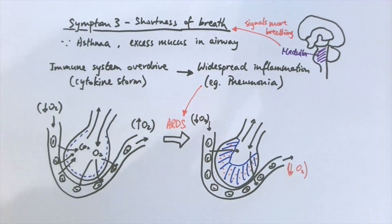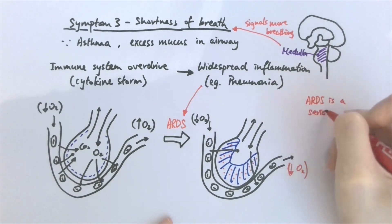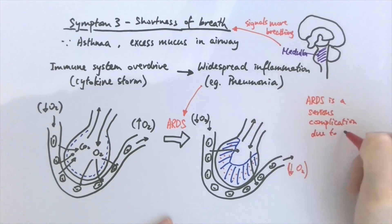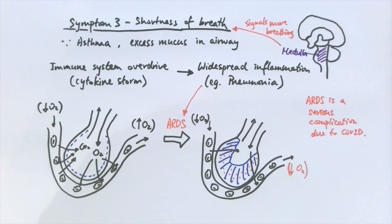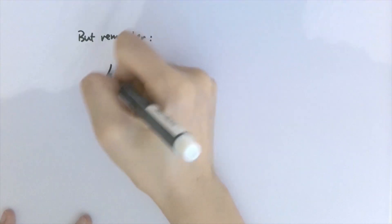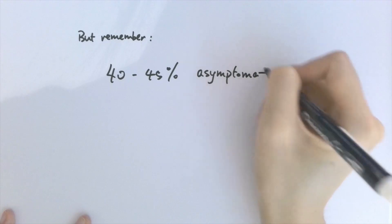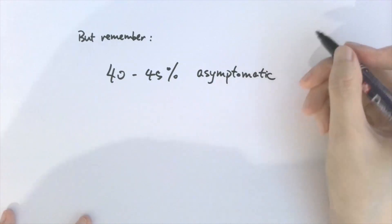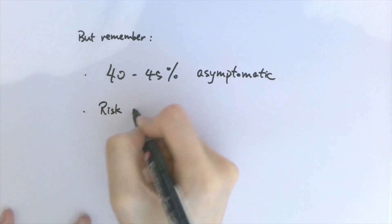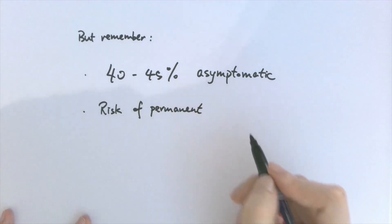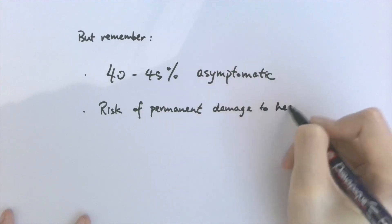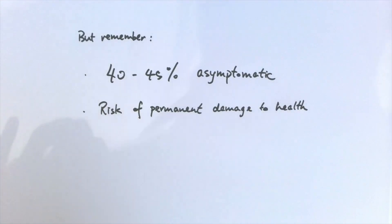If shortness of breath is caused by ARDS, this means the virus has already spread throughout your system. It's a serious complication of COVID and you'd need to be admitted to hospital for proper treatment. People who survive ARDS may live with permanent lung damage and a lower quality of life. It's important to keep in mind that 40 to 45 percent of people are asymptomatic, meaning they don't show any symptoms but can still spread the virus. This is what makes SARS-CoV-2 such a dangerous virus, on top of the fact that it can permanently damage your health even if you've recovered, unlike a common cold or influenza.